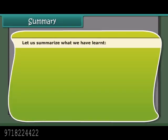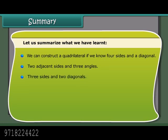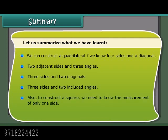Summary: We construct a quadrilateral if we know 4 sides and a diagonal, 2 adjacent sides and 3 angles, 3 sides and 2 diagonals, or 3 sides and 2 included angles. To construct a square, we need to know the measurement of only one side.